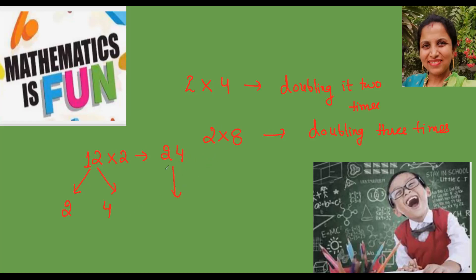If he is multiplying with four, then he is doubling the number two times. Similarly, if he is multiplying the number by eight, he is doubling the number three times. Let's take an example. Suppose you have 12 multiplied by two. You just teach the child to double the number. So double of one is two, double of two is four, so it will be 24.